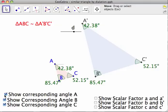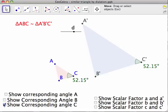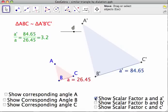Okay. So let's hide those. Now, the second part of that is the corresponding sides are proportional. So let's show the scale factor for A and A prime. Okay. Here's A, this red line here. A equals 26.45.